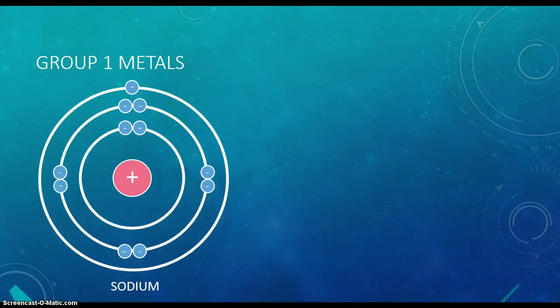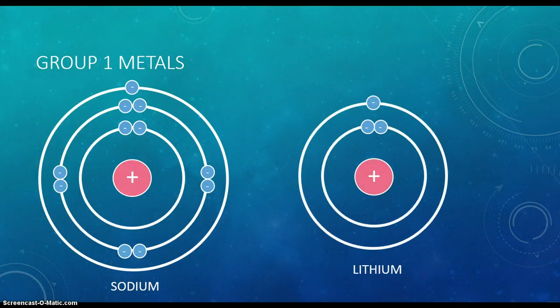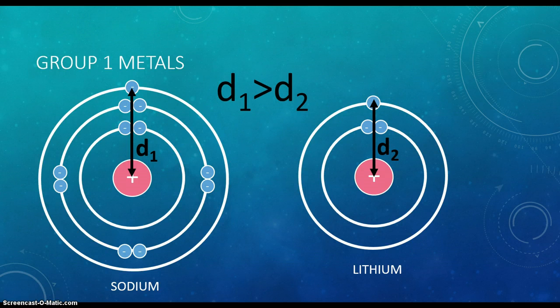Now, meet the lithium atom. Although it also has one valence electron, it has one less electron shell than sodium. Because the second electron shell is closer to the nucleus than the third electron shell, the electrostatic attraction between the positively charged nucleus and the negatively charged valence electron is a lot stronger. As a result, the valence electron is harder to remove, so lithium is less reactive than sodium.